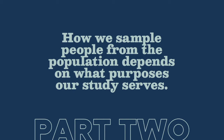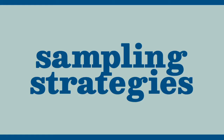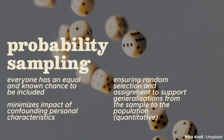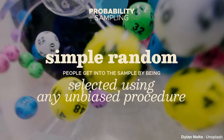How we sample people from the population depends on what purposes our study serves. Sampling strategies fall into two general categories, and we'll look at the four most common types under each one. The first category contains the probability sampling strategies, called that way because everyone in the population has an equal and known chance to get into the sample. People are randomly selected, and so personal characteristics irrelevant to the study are drowned out by the randomization. These types of sampling are preferred in quantitative studies because probability samples tend to be representative.